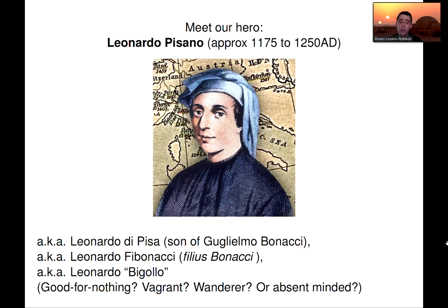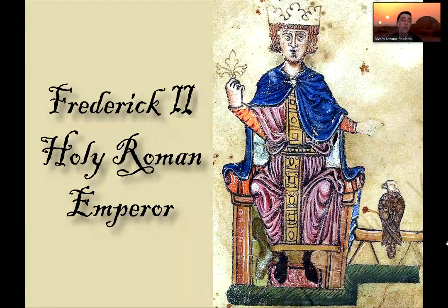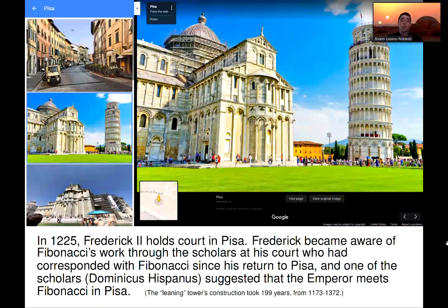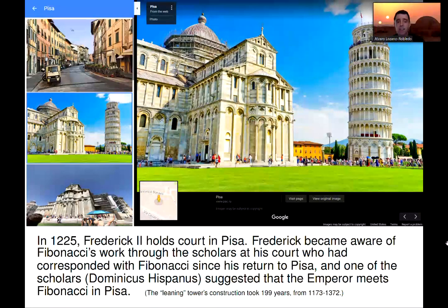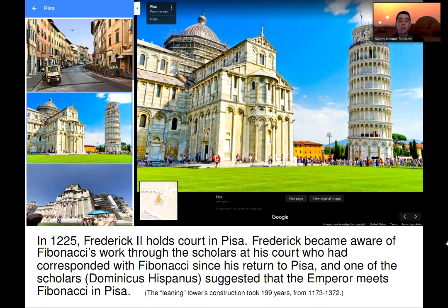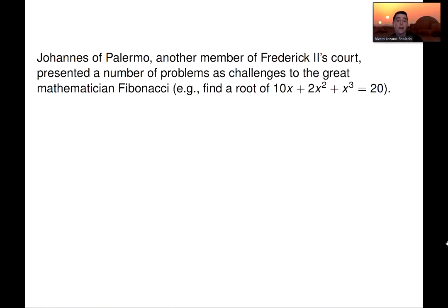In any case, he was known as Bigolo, Fibonacci, or Pisano. And he was a very well-known mathematician of the time, so well-known that Frederick II, Holy Roman Emperor, became aware of the work of Fibonacci. Frederick II held court in Pisa, and some of the scholars of the court told him about Fibonacci, and they suggested to invite Fibonacci to court. And another member of the court, Johannes of Palermo, suggested that we challenge Fibonacci with a number of problems and see how Fibonacci responds to these.